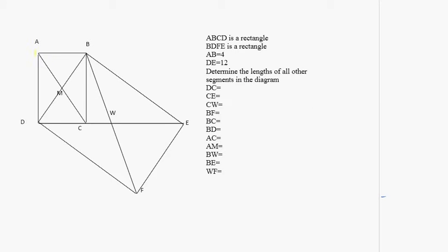We're given that triangle ABCD is a rectangle. We also know that triangle BDFE is a rectangle, which will give us a whole bunch of right angles and a whole bunch of properties.